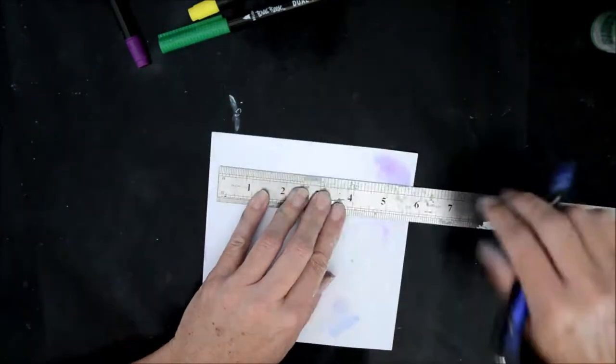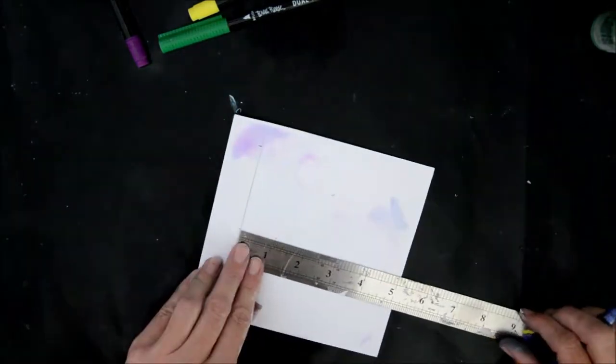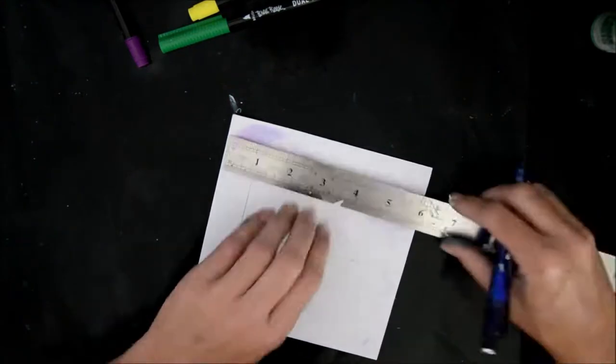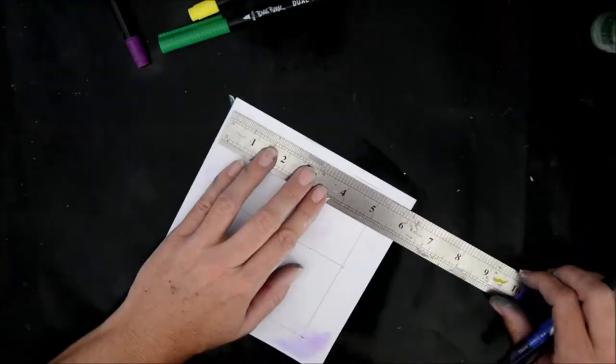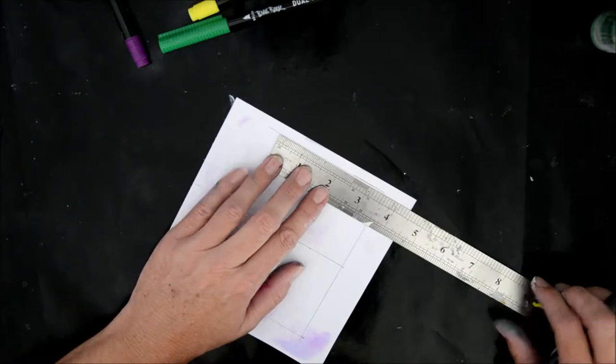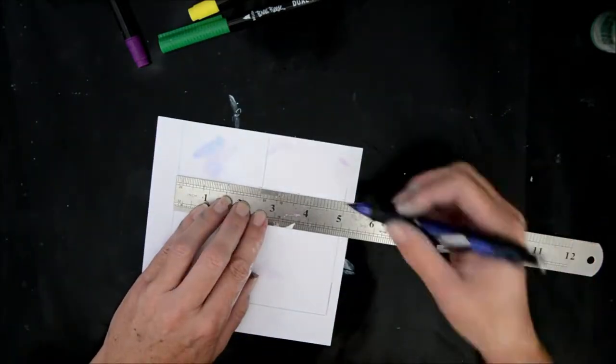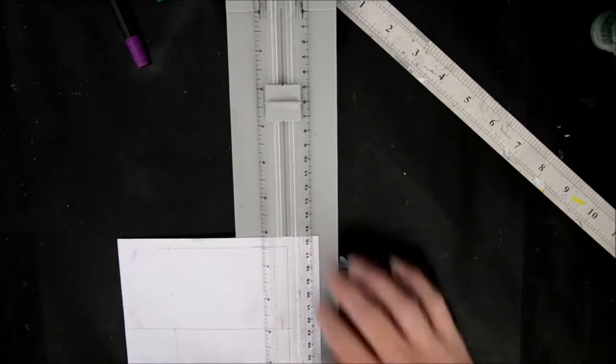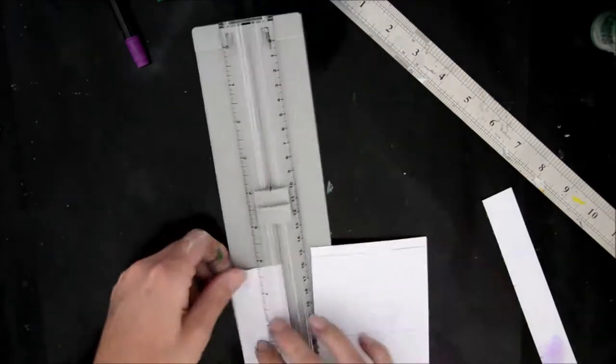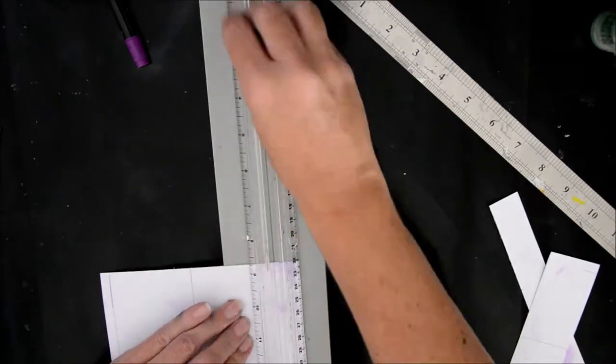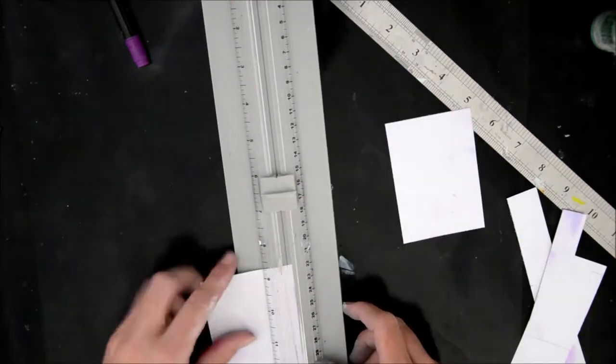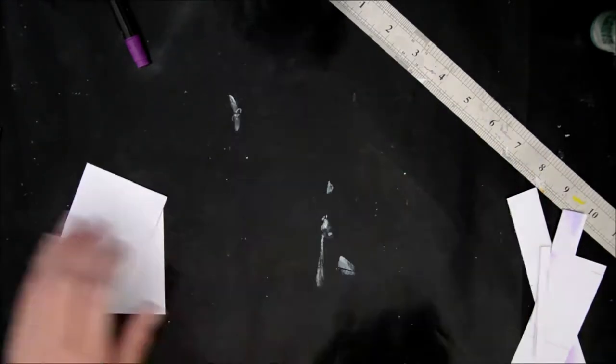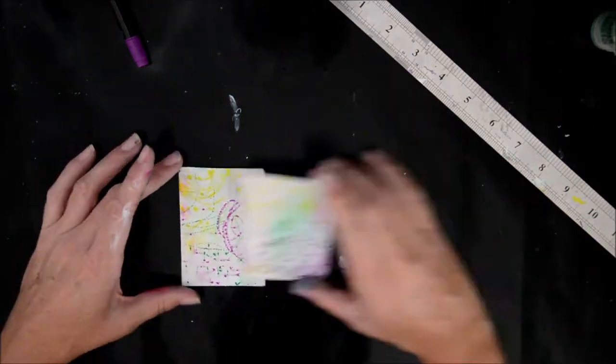Now I've decided to make two ATCs out of this background. I just cut towards the middle. I could have ruled lines to see what I was getting, but I wanted that element of surprise. I love ATCs - I'm pretty stuck on them at the moment. They're just a great size.